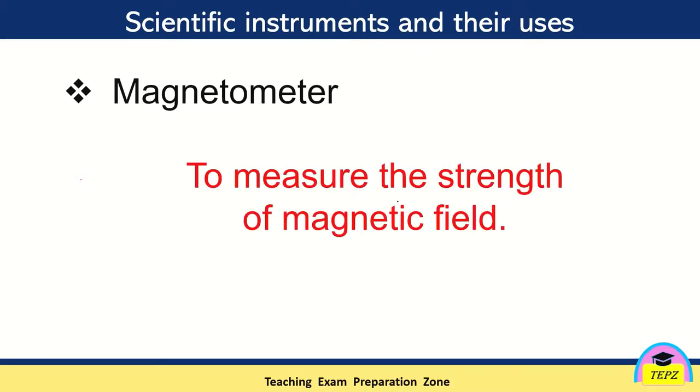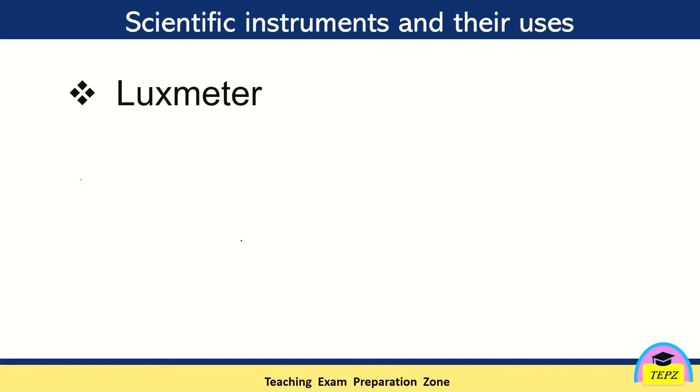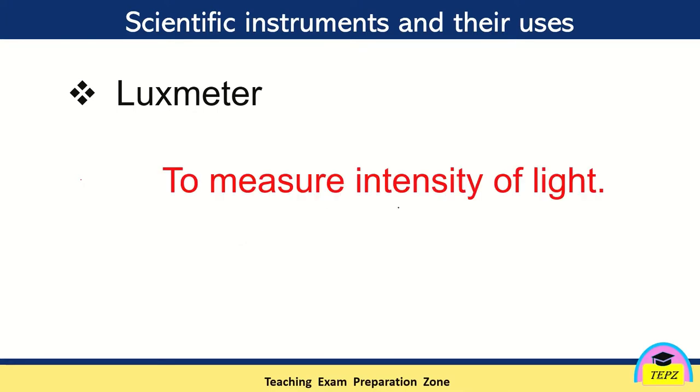Magnetometer. Magnetometer is used to measure the strength of magnetic field. The magnetic field is a field around the magnet. Its strength is measured with the help of magnetometer. Luxmeter is used to measure the intensity of light. The intensity of light is measured with the help of luxmeter.